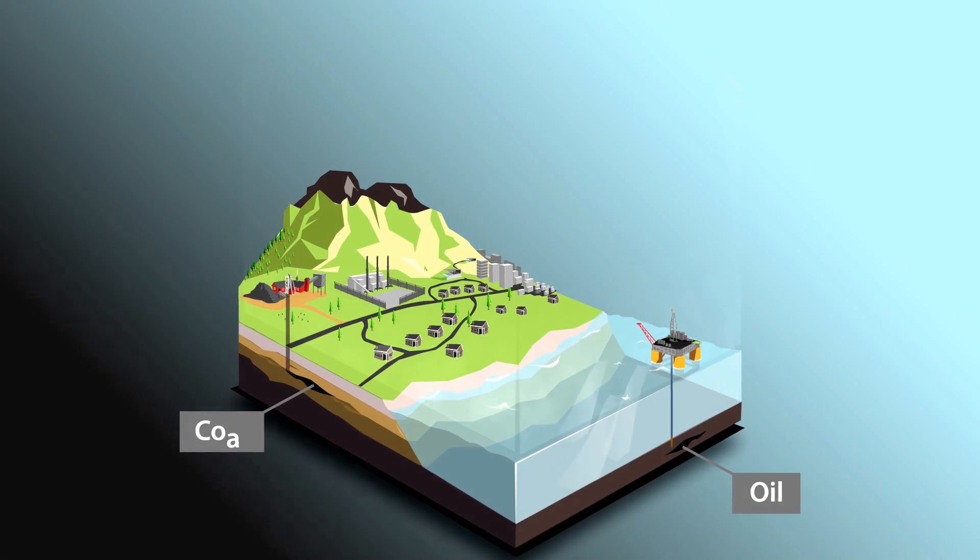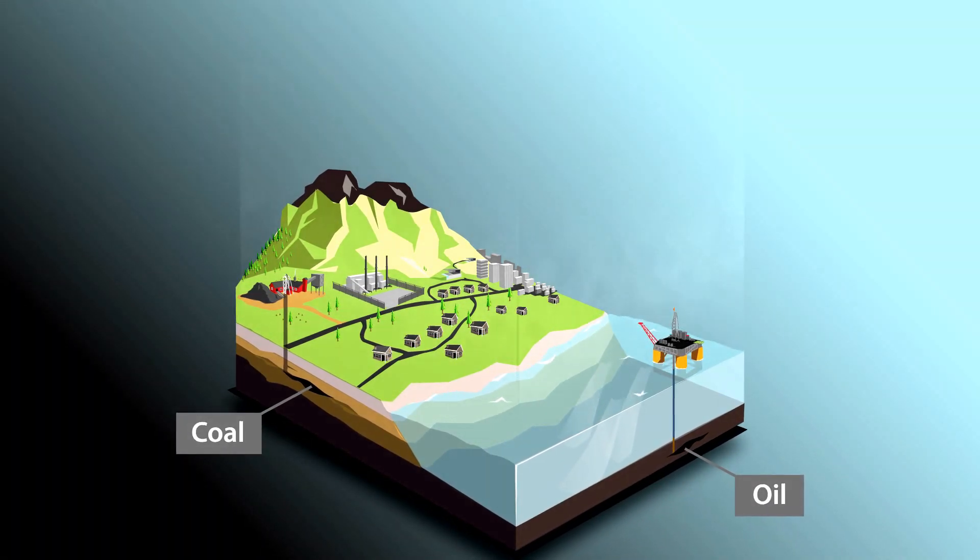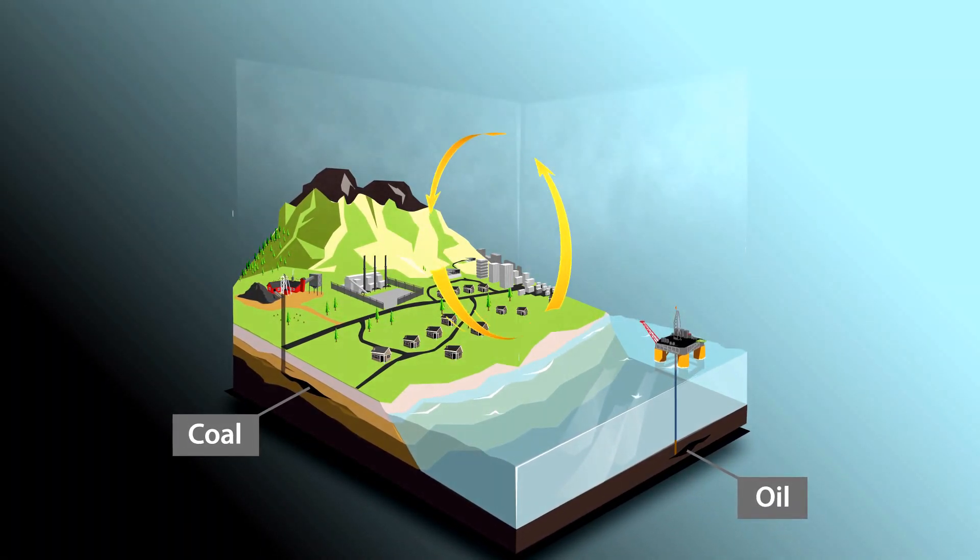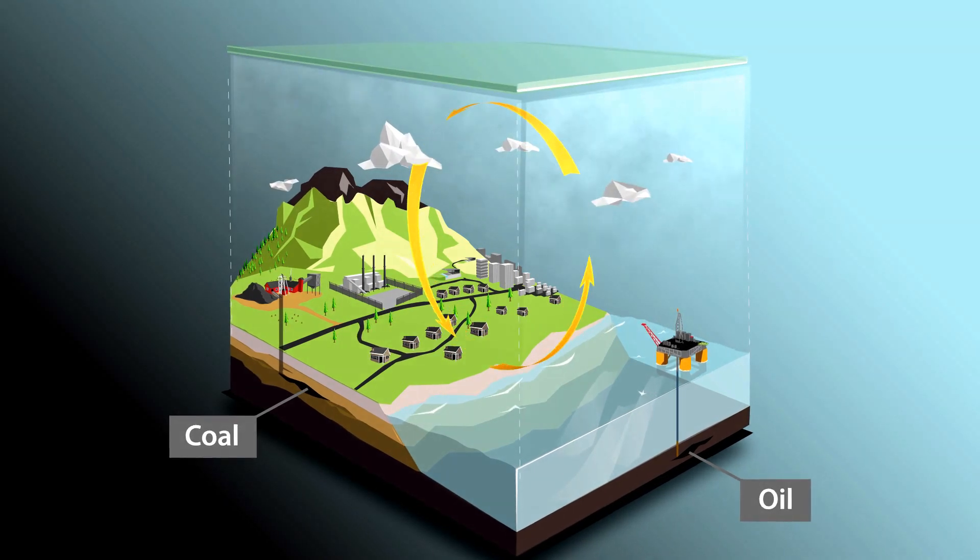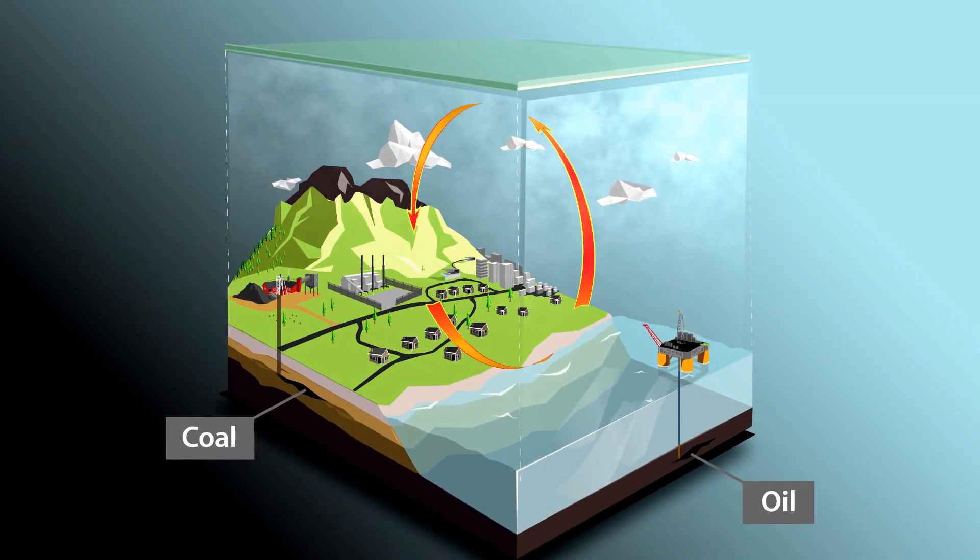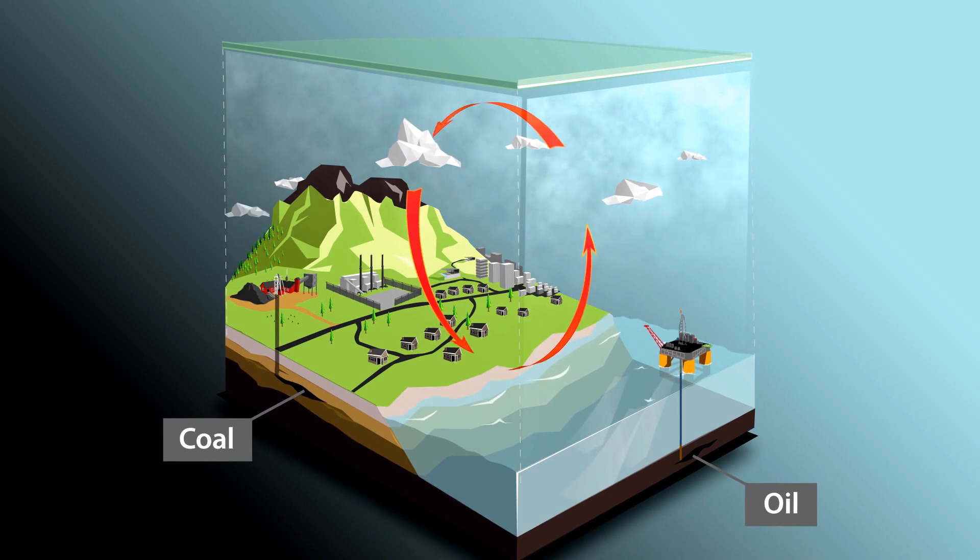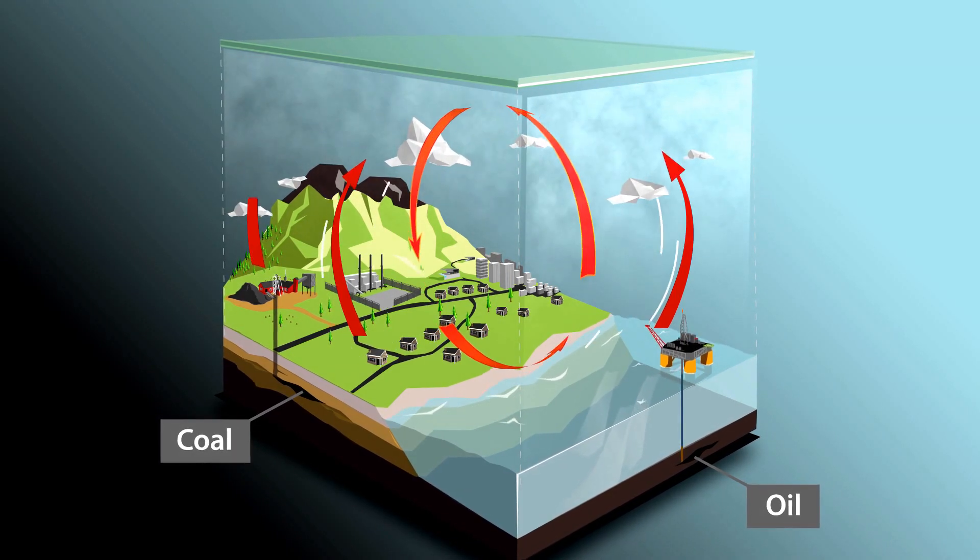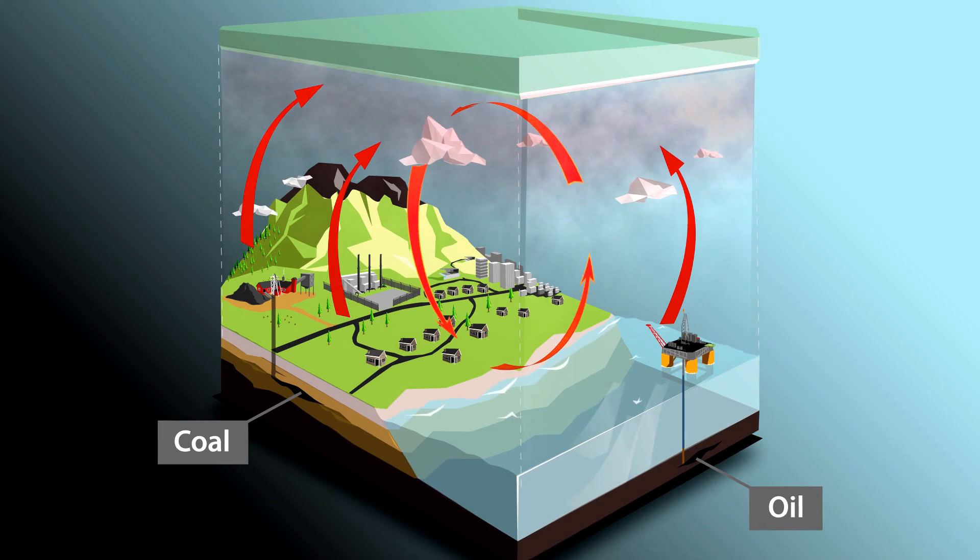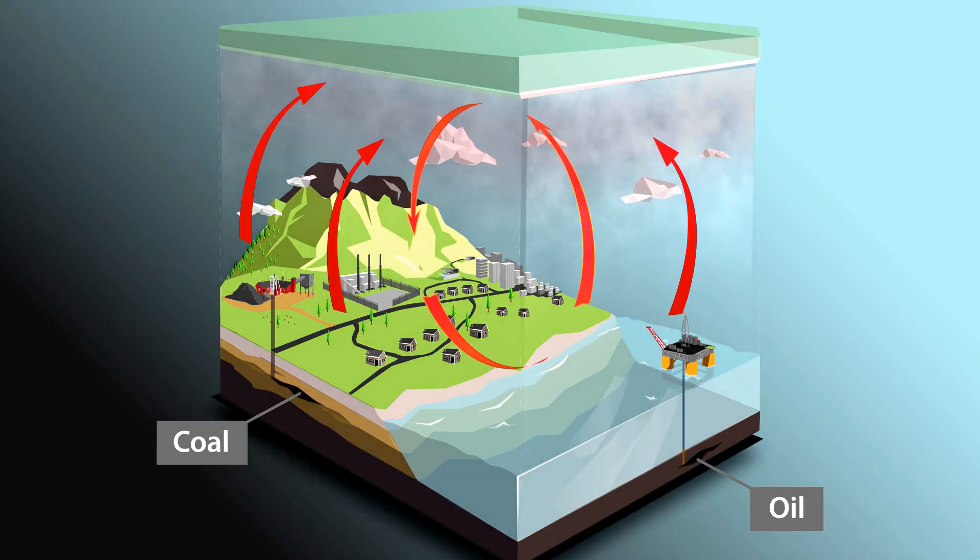Since the Industrial Revolution, humans have been adding carbon dioxide and other greenhouse gases to the atmosphere at a much faster rate than Earth's natural cycle can remove them, causing atmospheric concentrations of greenhouse gases to rise. As a result, our global climate is changing.